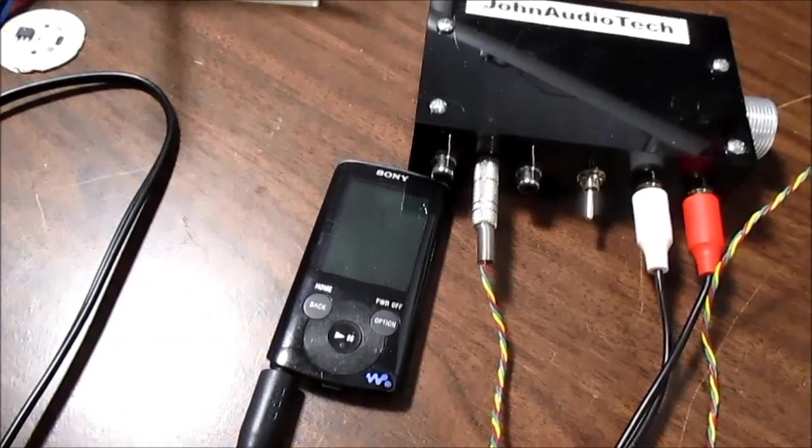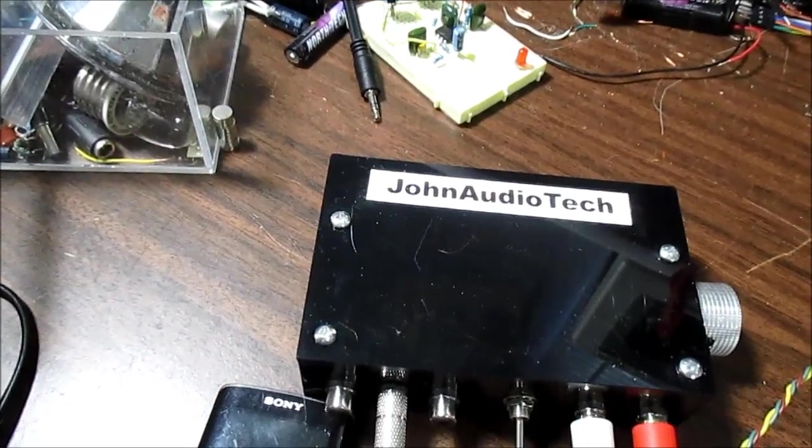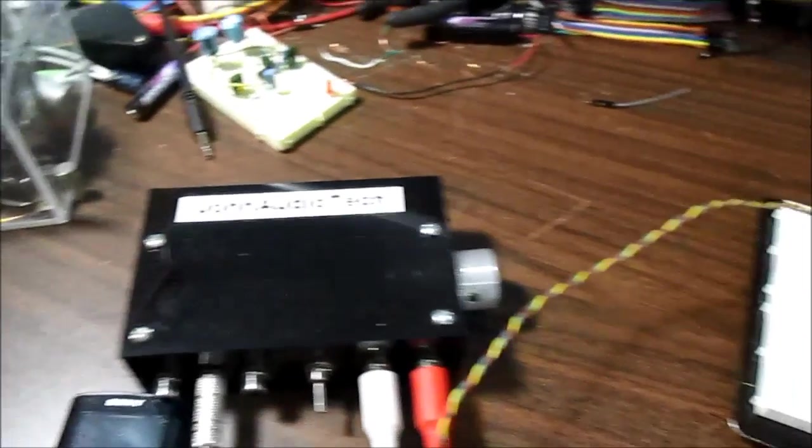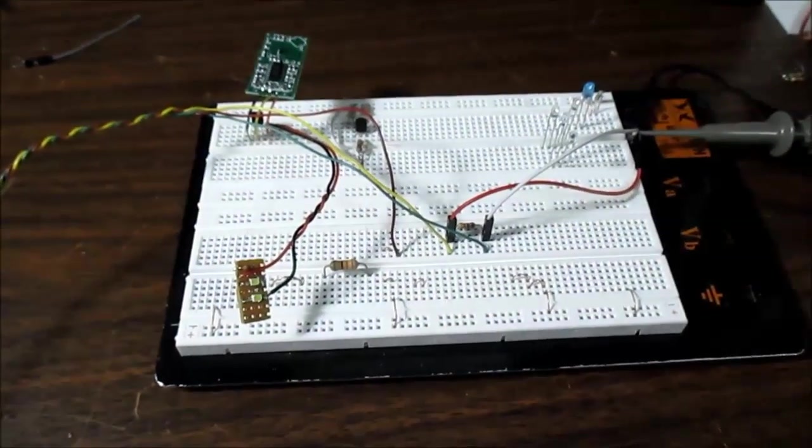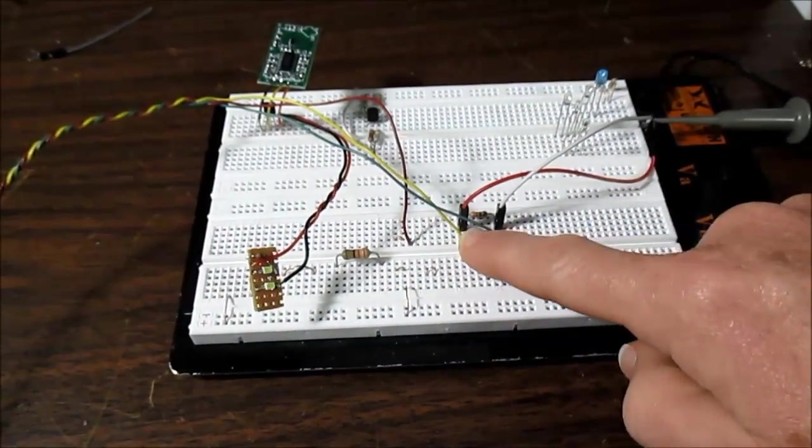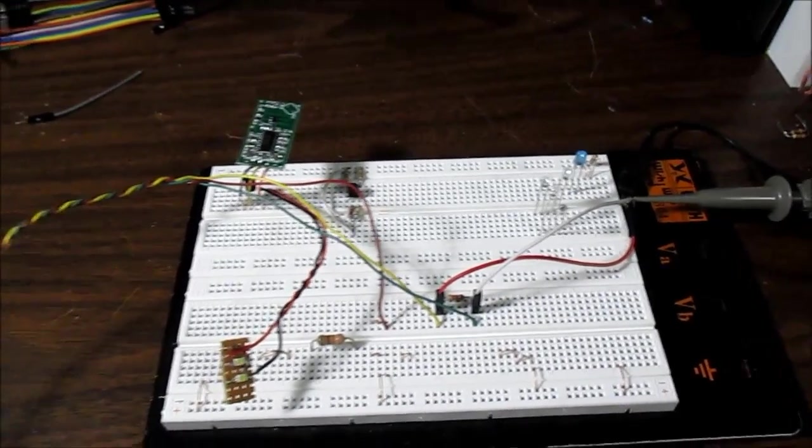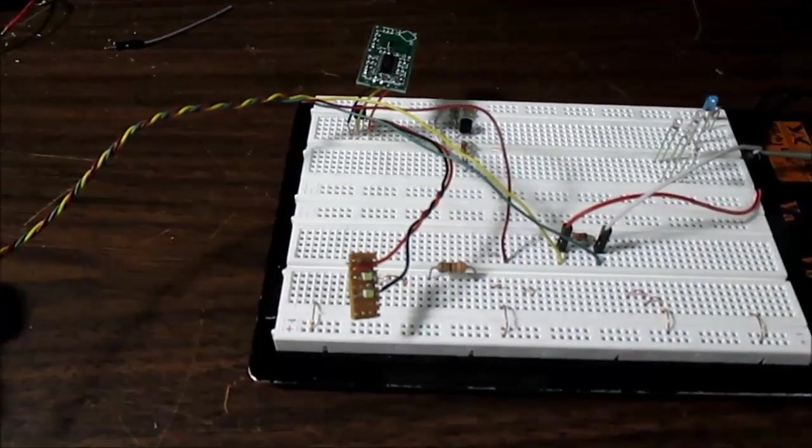I have my music player and run the signal into the preamp. The output of the preamp will go to this load resistor, 1K, and we'll scope across that just for this demonstration.